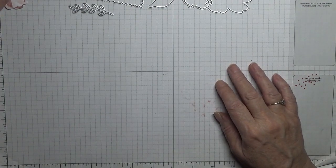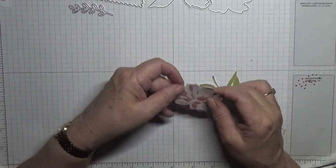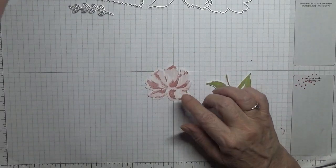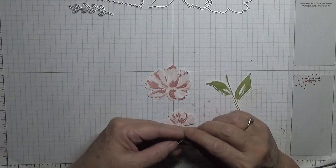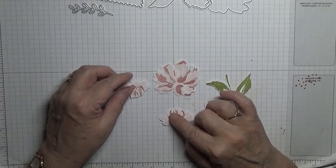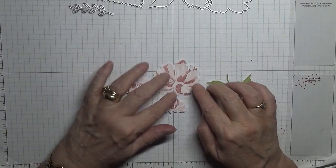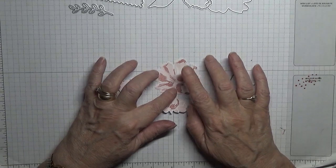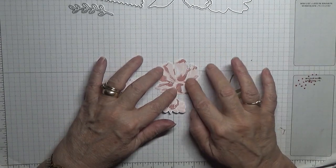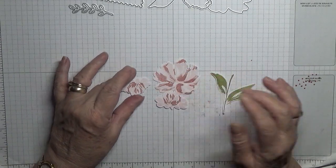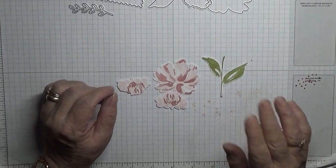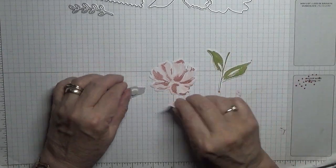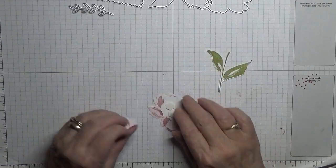And then for the stamps, because I have already stamped out one big flower and two small flowers, we need to do another big one and another small one. I used Blushing Bride and Rococo Rose ink on the flowers and Old Olive on the leaves. We need another leaf so let's go inking.